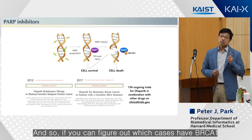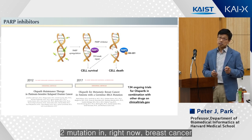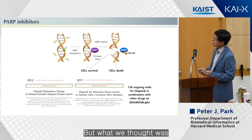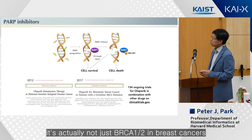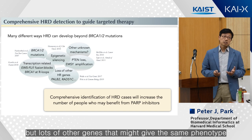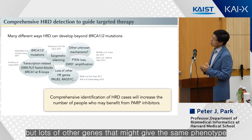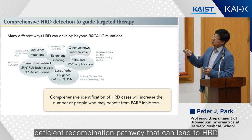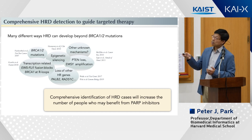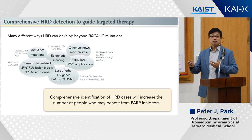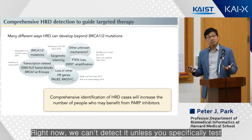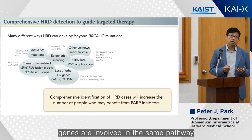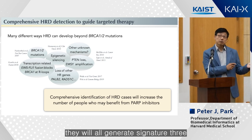Right now, breast cancer patients with BRCA1 or BRCA2 mutations are eligible for PARP inhibitors. But we thought it's actually not just BRCA1 and 2 in breast cancers — there are lots of other genes that might give the same phenotype. You can sequence BRCA and find mutations, but there are other genes in the same homologous recombination deficiency pathway that can lead to HRD. For instance, BRCA might be silenced by epigenetic methylation. Other genes like RAD51C are known, but regardless of the specific mutation, they will all generate Signature 3.